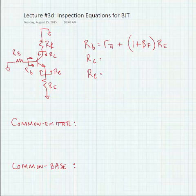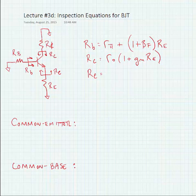The resistance looking into the collector is equal to r_out of the transistor times (1 + gm times any extrinsic resistance tied to the emitter). Finally, the resistance looking into the emitter is approximately equal to 1/gm.